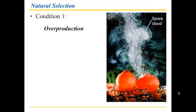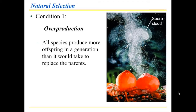The first condition is called overproduction, and we see a lot of this in nature. It turns out that all species — all species — produce more offspring in a generation than it takes to replace the parents. What does that mean?